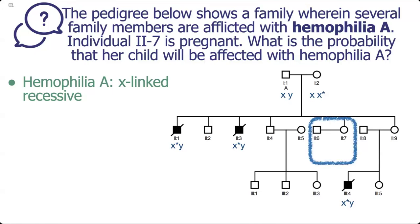So this is the pairing we are looking at. We have individual 2-7, who is a female, and 2-6, and 2-7 is pregnant. We don't know the sex of the child, so we label it with a diamond on the pedigree. The question asks: what is the probability that her child will be affected with Haemophilia A?